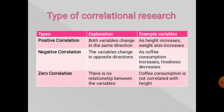There are three types of correlation research. First, positive correlation, in which both variables change in the same direction. For example, as height increases, weight also increases.